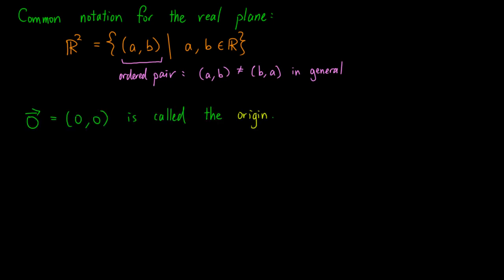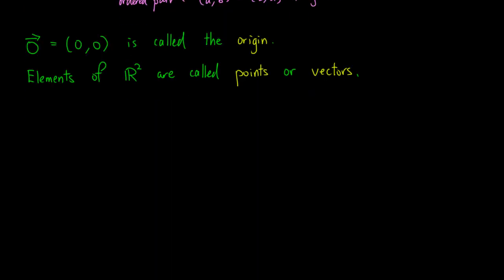The element (0,0) is called the origin and is denoted by the zero vector, because we know that elements of R², which we initially understand as points on the plane, can be represented as vectors.